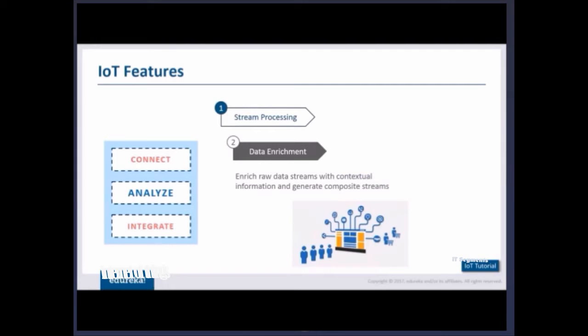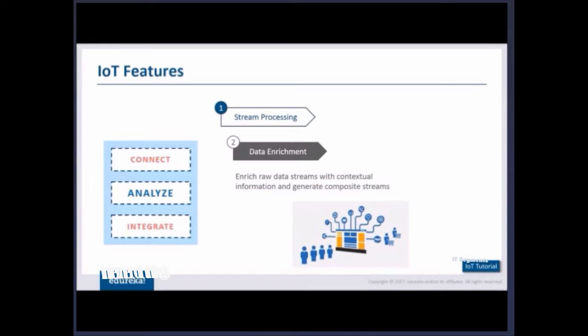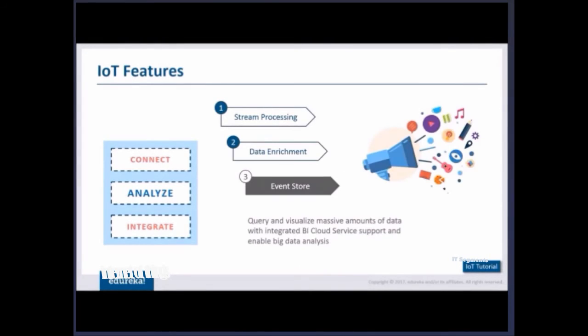Apart from this, the raw data being streamed from all the things needs to identify which is contextually important information to be taken forward. Once I have the relevant information, I can generate composite streams of information which can be taken ahead for future analysis and understanding. This is what your data enrichment process does.